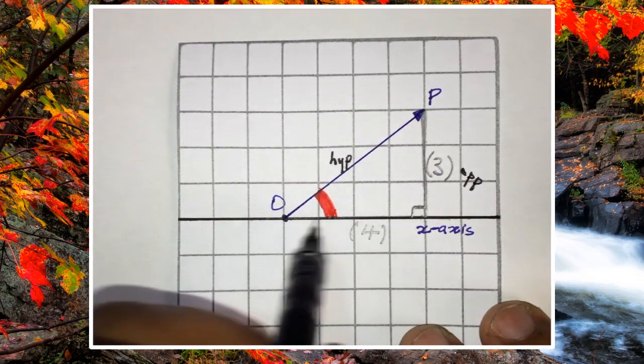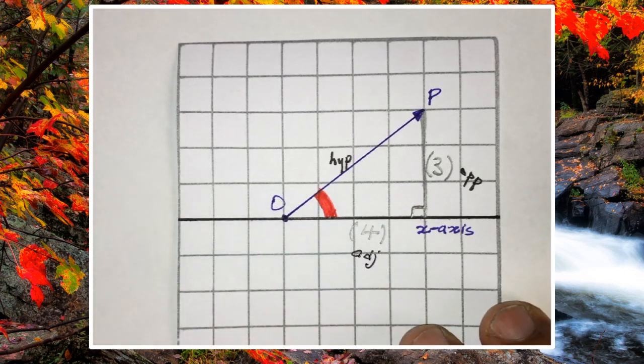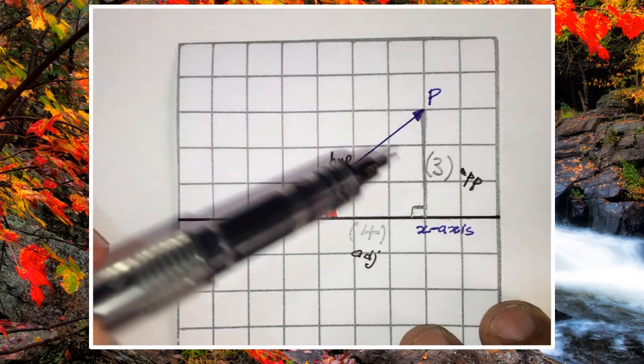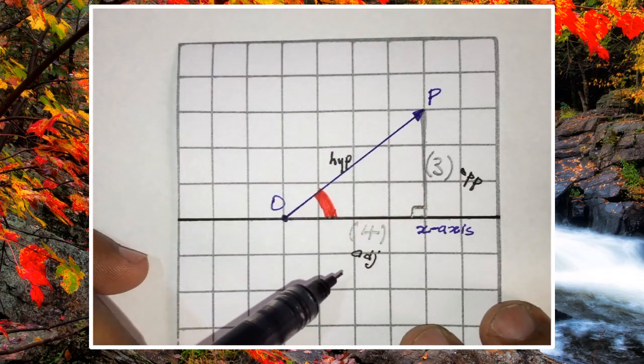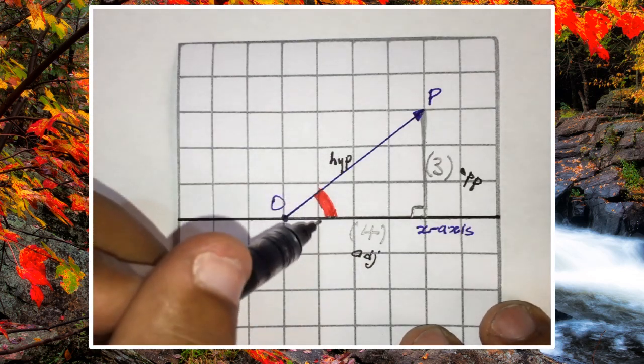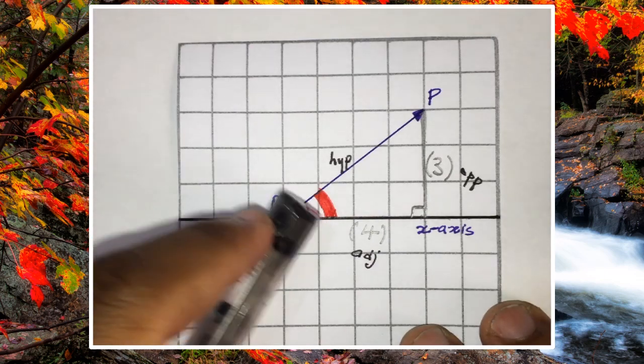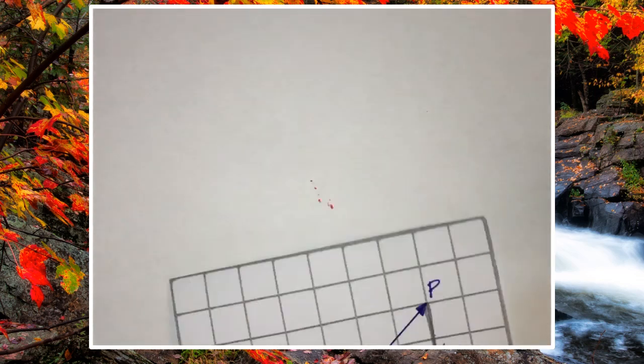OPP, and this line would be the adjacent. Good. So we have the opposite which is three units, the adjacent which is four units, and the hypotenuse that we just don't know. I need to calculate the size of this angle right here. So the ratio that we were going to use must have the opposite and the adjacent, so